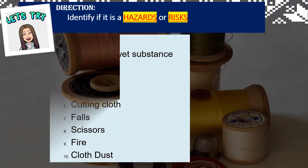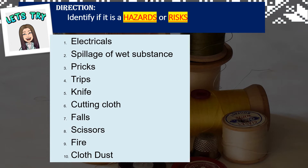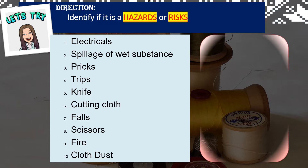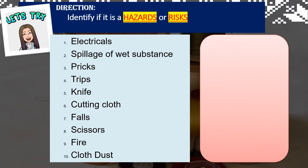Next direction: identify if the following is a hazard or risk. Number 1: electrical — the correct answer is hazard. Number 2: spillage of wet substance — the correct answer is also hazard.